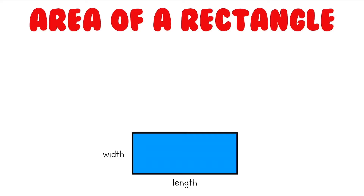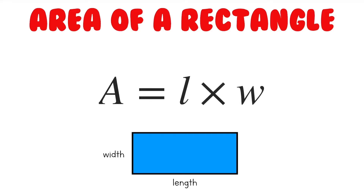To find the area of a rectangle, we just need to multiply the length by the width. The L stands for the length, and the W stands for the width. Remember, it doesn't really matter which one you multiply first, because the order of numbers doesn't matter in multiplication. For example, 3 times 8 is the exact same thing as 8 times 3. All that matters is that you multiply two different sides together, and those two sides are next to each other, not across from each other.